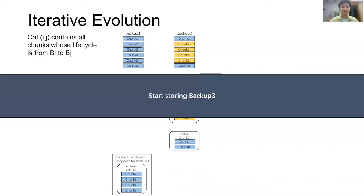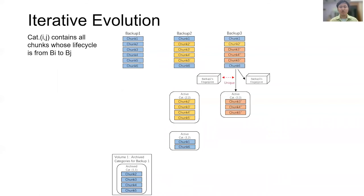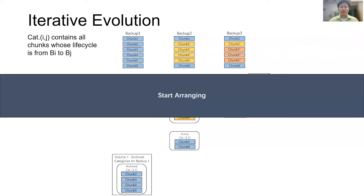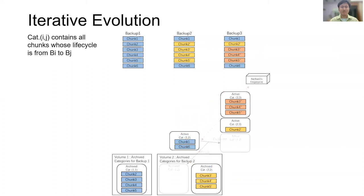After that, we start storing backup 3. We also record new fingerprints, deduplicate internal and adjacent chunks and release old fingerprints. Then we run arranging. In arranging, we also migrate and archive chunks. Finally, our required data layout is generated, and it is the same as we showed previously.